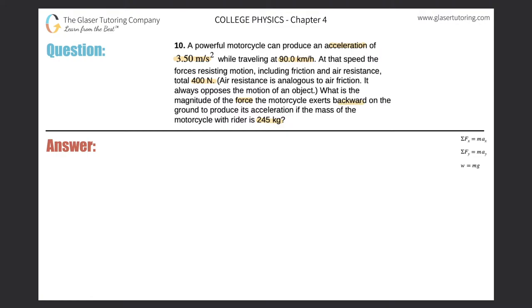Alright, so let's just take this apart. So it says that the motorcycle can produce an acceleration of 3.5 meters per second squared. So let's write that. So the acceleration of this motorcycle, I'll just call it in the x direction, is 3.50 meters per second squared. Now, it also tells us the mass of the motorcycle with the rider is 245. So the mass is going to be 245 kilograms.